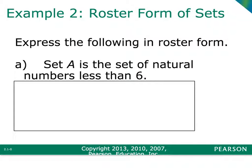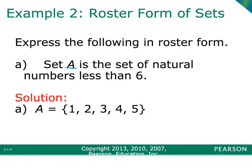For example, if I asked you to write in roster form the set A — notice the capital letter — which is the set of natural numbers less than 6, you would put your curly brackets down, write your capital letter A, use your curly brackets, and then list the numbers 1 through 5. Remember, your natural numbers are whole numbers greater than 0, so that would be your set in roster form.